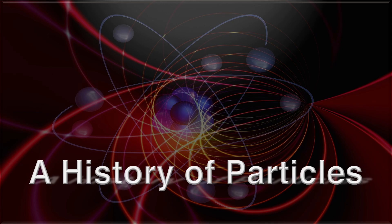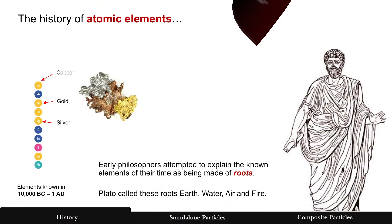A history of particles — we are going to start first with a history of atomic elements because there are parallels to particles. We're going to start with BC times, when there was only a handful of atomic elements known. Copper, gold, and silver would be famous ones, and early philosophers attempted to explain these as being made of something in common.